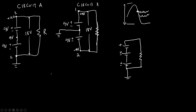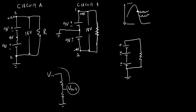In our next video, we will circle back to the voltage divider, which is a very useful circuit you will encounter pretty frequently. We'll talk about this circuit and derive the equation to get V_out as a function of V_in and the two resistor values.